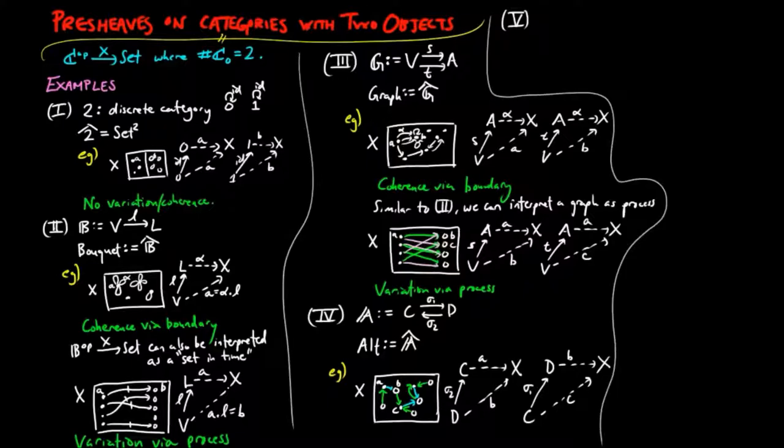Number five, we let RG be the following category, subject to the relations IS is equal to the identity on V, which is equal to IT, and SI is equal to sigma, and TI is equal to tau. This is the category of reflexive graphs.